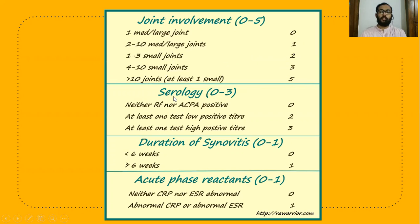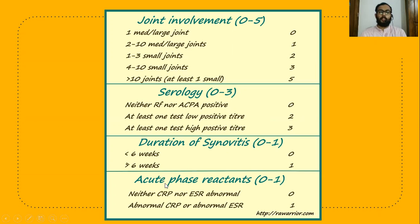For serology, the score ranges from 0 to 3. We mainly check anti-CCP, also known as ACPA, which is the gold standard test for detecting rheumatoid arthritis. If it is negative, the score is 0. If it is low positive, the score is 2. If it is high positive, the score is 3.